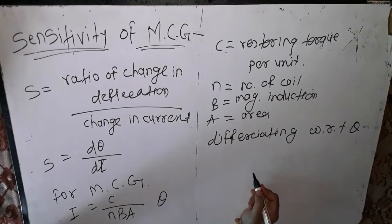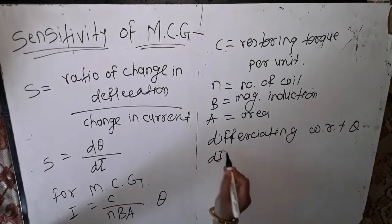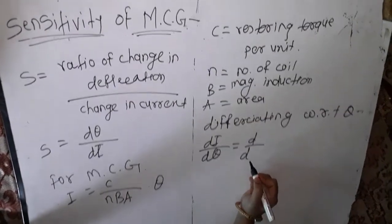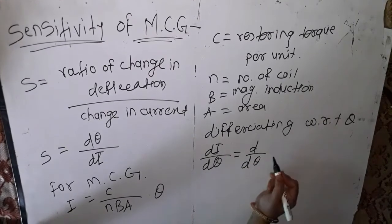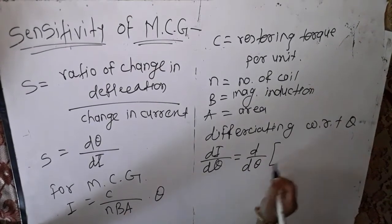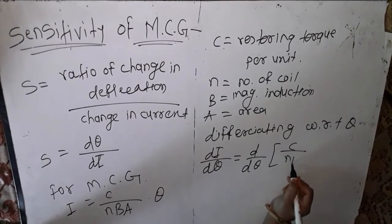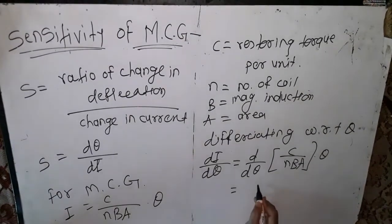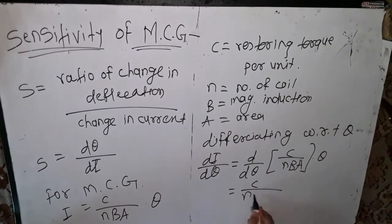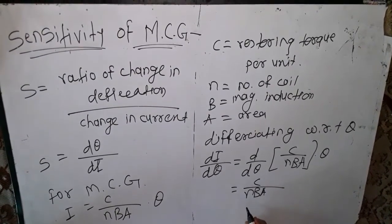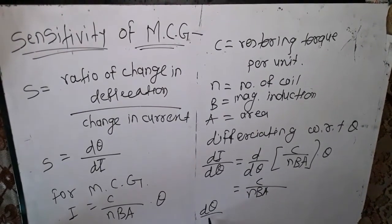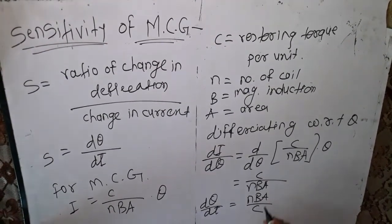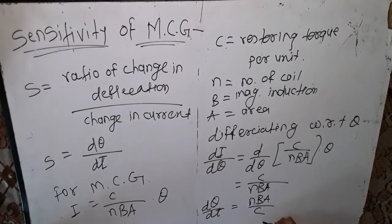Differentiating i = c/(nBA)·θ with respect to θ, we get di/dθ = c/(nBA). Therefore, dθ/di = nBA/c.